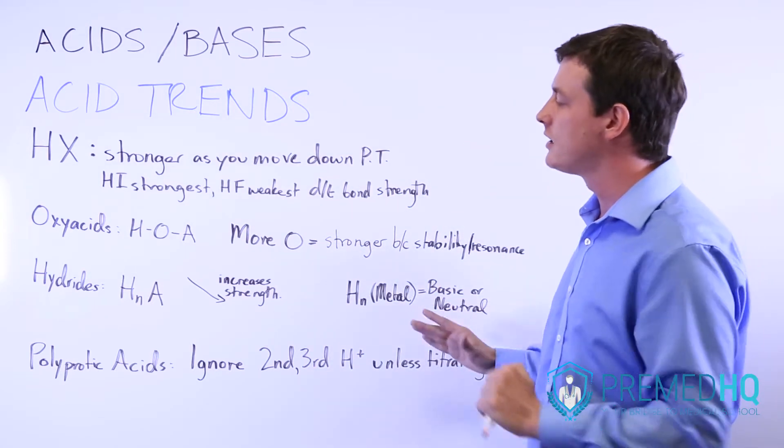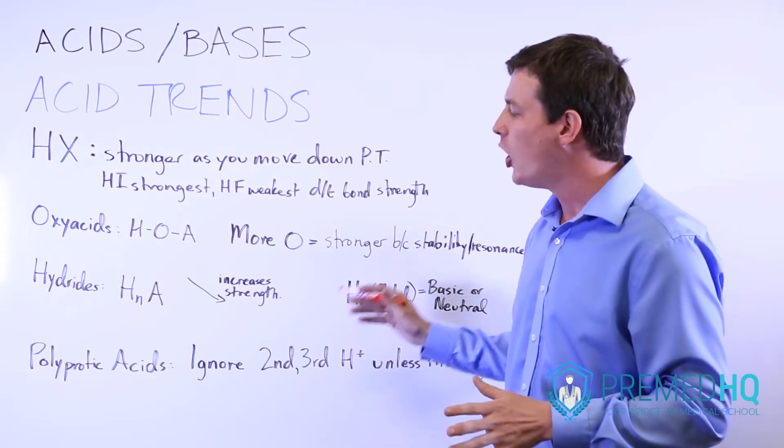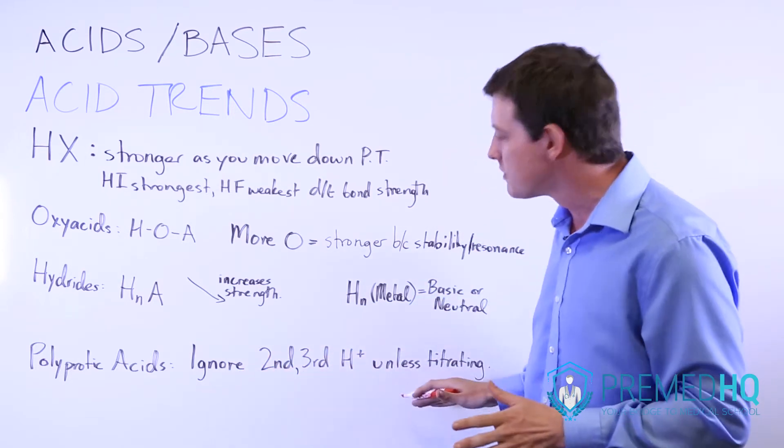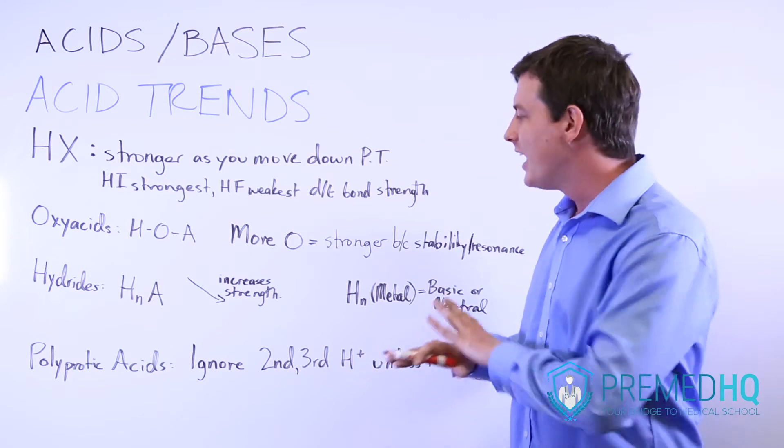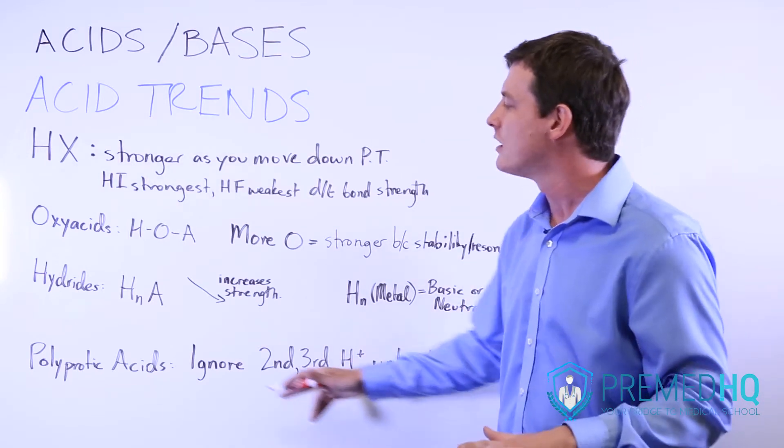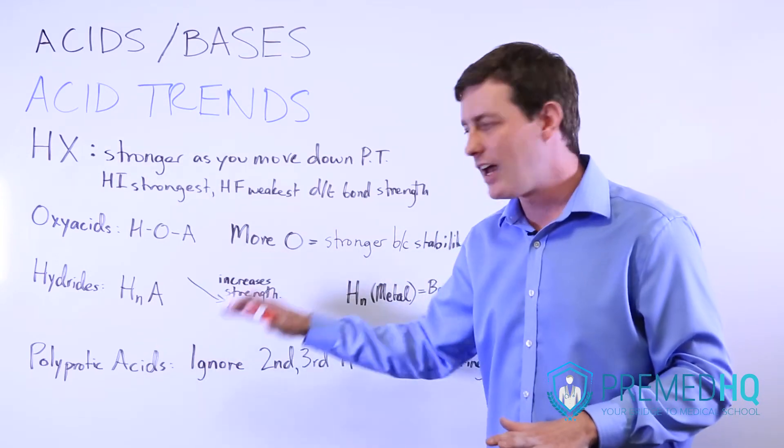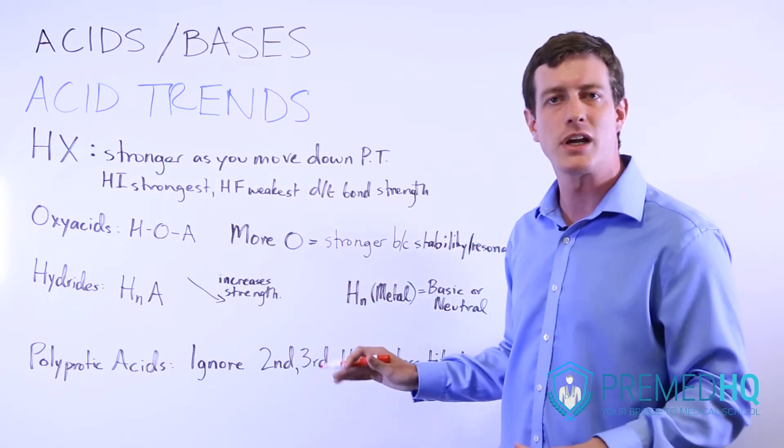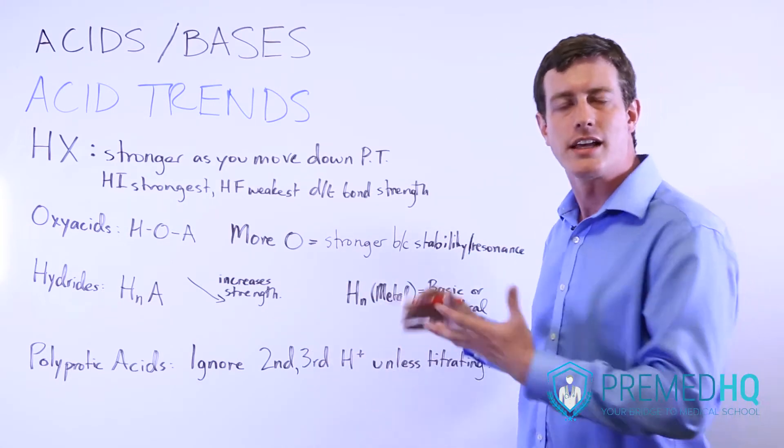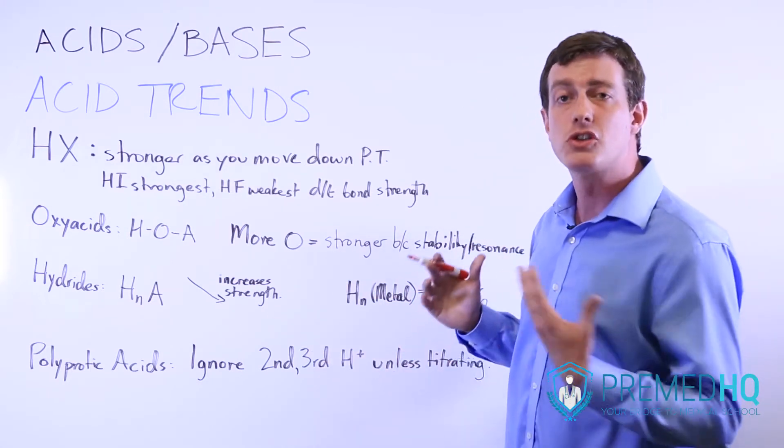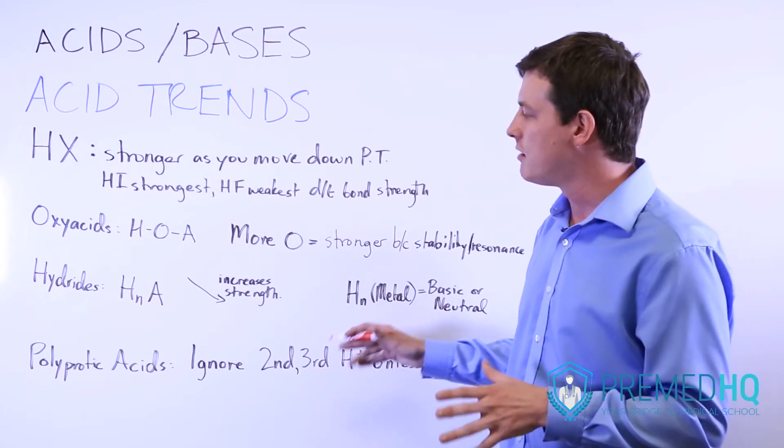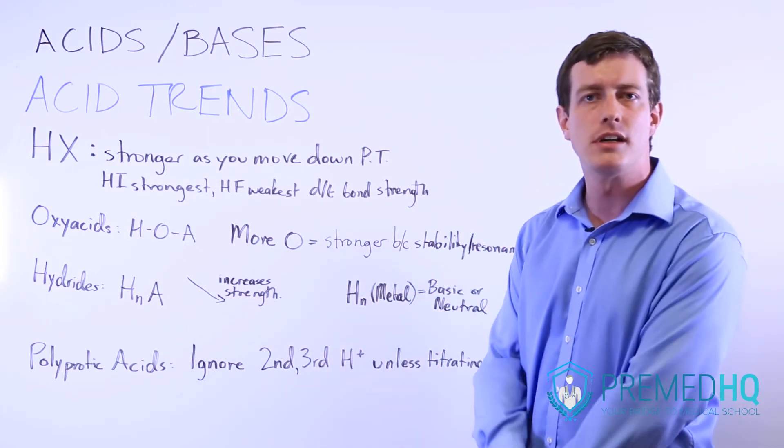However, when you're doing calculations of acid strength, only look at that first proton that is being dissociated, and that's the only one you need to consider with the polyprotic acid. That is the one that defines the strength of a polyprotic acid like H2SO4, H3PO4, or any compound that has more than one acidic proton.